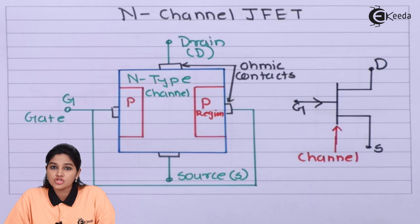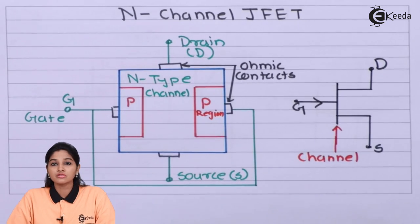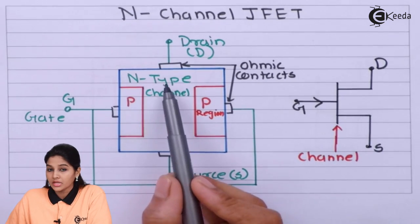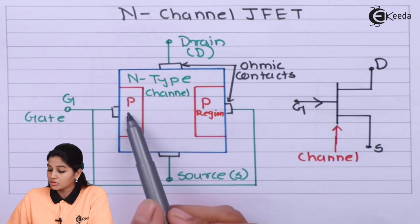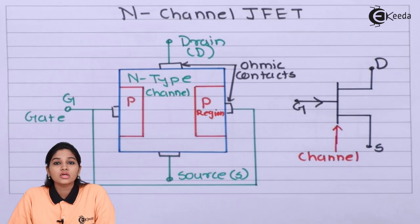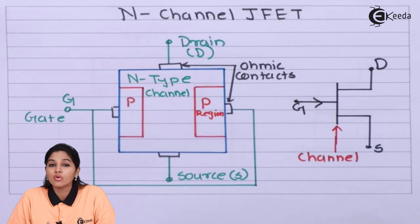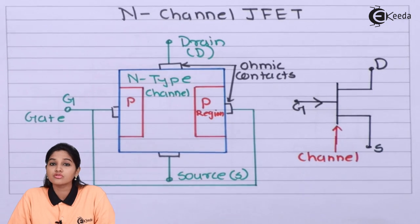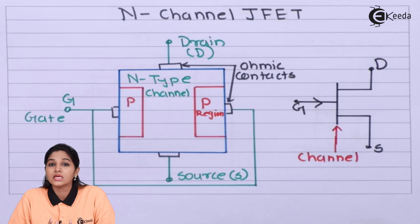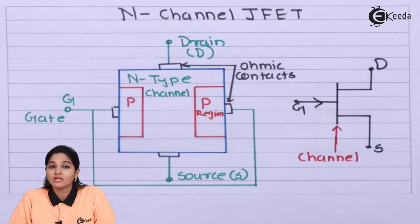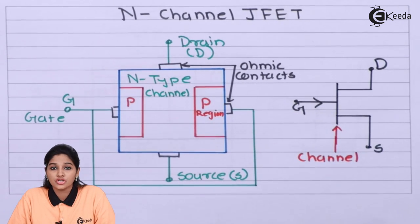Moving towards the construction of N-channel JFET: it consists of an N-type semiconducting bar and two heavily doped P-regions. On both sides of the N-type semiconducting bar, two heavily doped P-regions are diffused or alloyed to create two P-N junctions. The space between the junctions — the N-type semiconducting bar — is called the channel. Since the channel is N-type, whatever current flows through the JFET is due to the majority carrier, that means electrons.